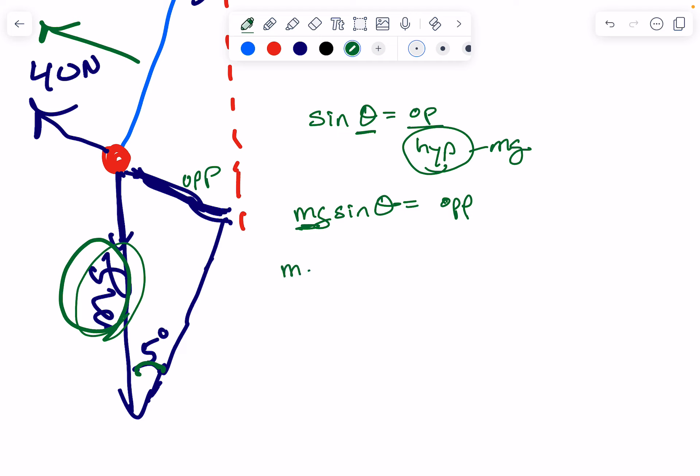g, of course, is 9.8. So m times 9.8 times the sine of 5 degrees – make sure your calculator is in degrees and not radians – equals 40 because this is the opposite number. And then you're going to solve for the mass.